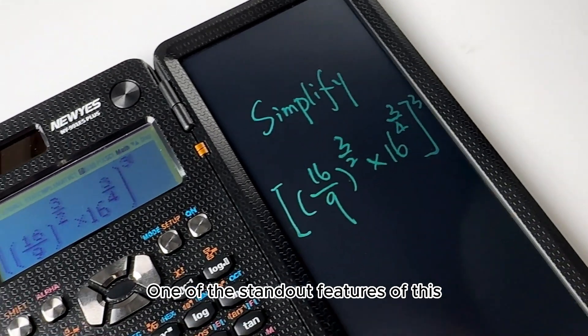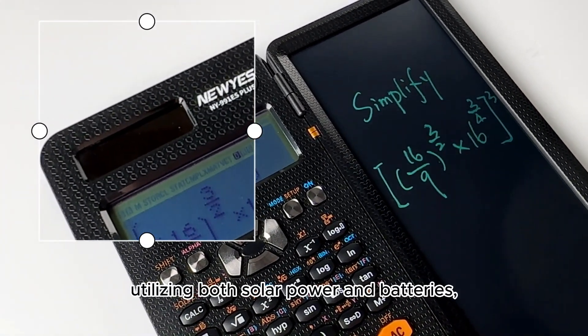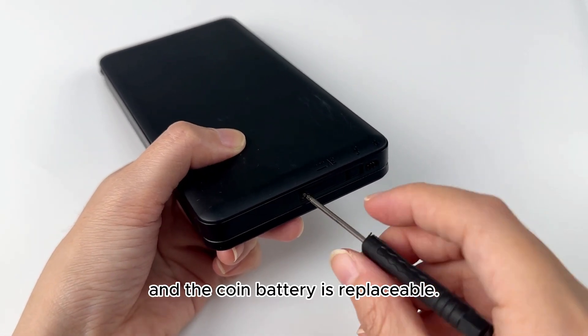One of the standout features of this calculator is its dual power source, utilizing both solar power and batteries, and the coin battery is replaceable.